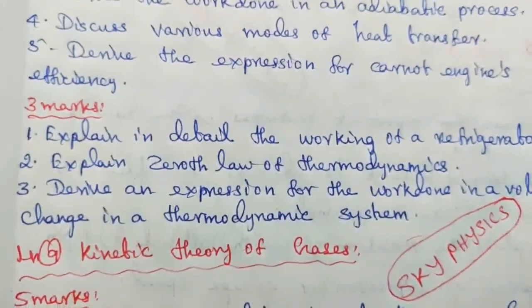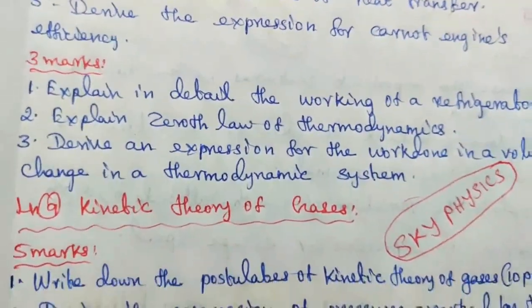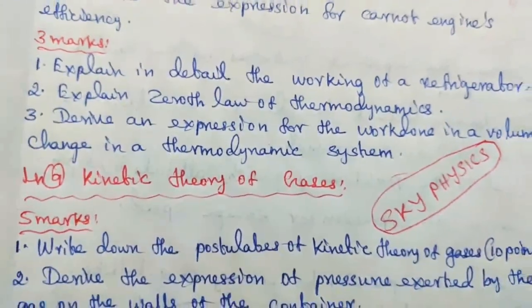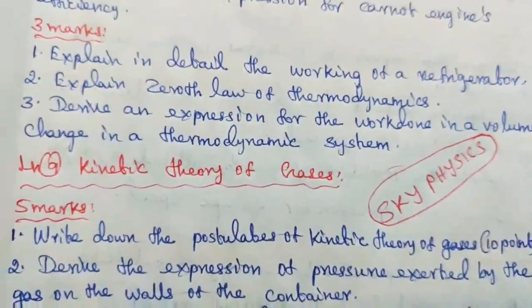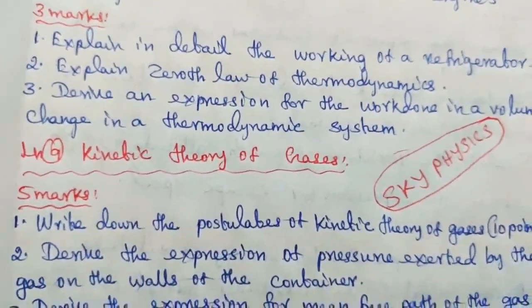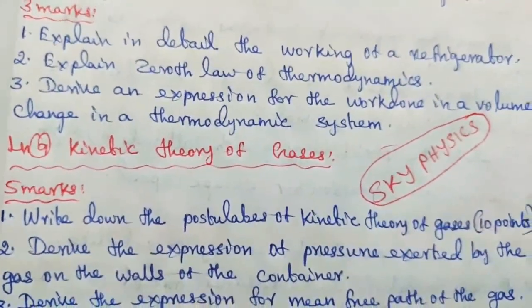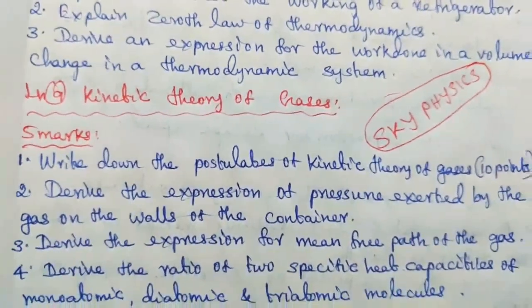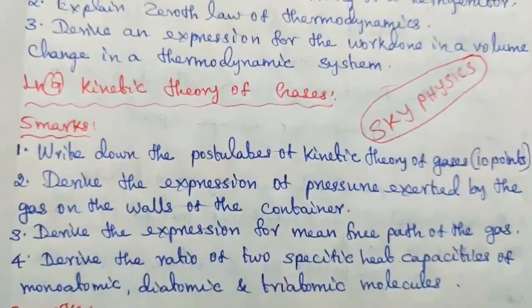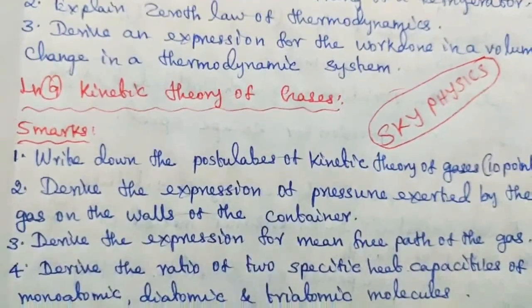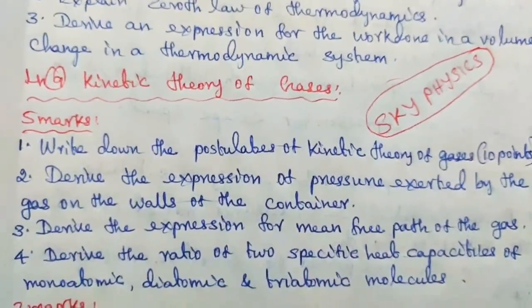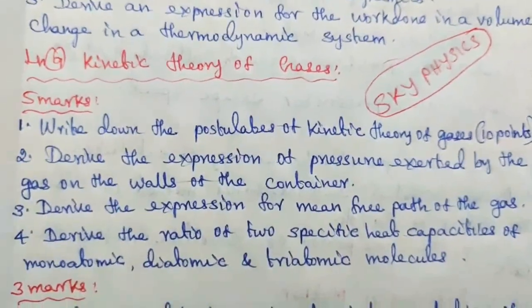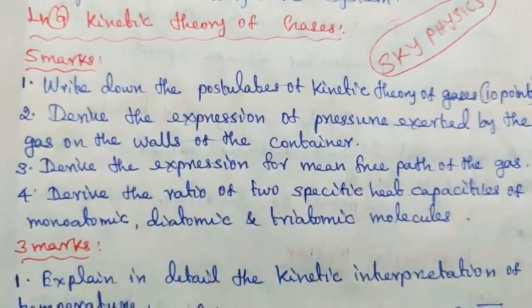Lesson 9, Kinetic Theory of Gases, 5 marks. Question number 1: Write down the postulates of kinetic theory of gases, 10 points. Question number 2: Derive the expression of pressure exerted by the gas on the walls of the container. Question number 3: Derive the expression for mean free path of the gas. Question number 4: Derive the ratio of two specific heat capacities of monoatomic, diatomic, and triatomic molecules.